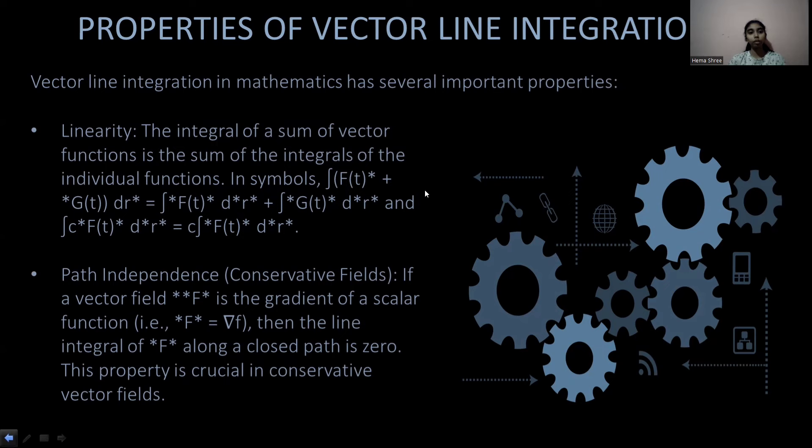The second property is path independence, also known as a conservative field. If the vector field F is the gradient of a scalar function, then the line integral of F along a closed path is zero. This property is crucial in conservative vector fields.